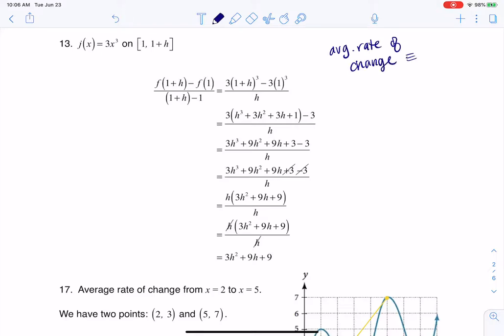And whenever you hear that phrase, average rate of change, that's code for get me the slope. And when you think about slope, we're always talking about a change in y over a change in x.